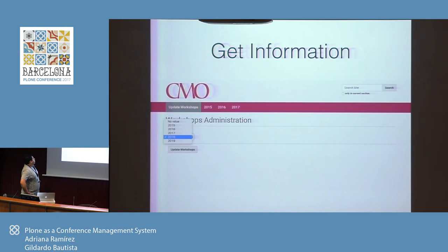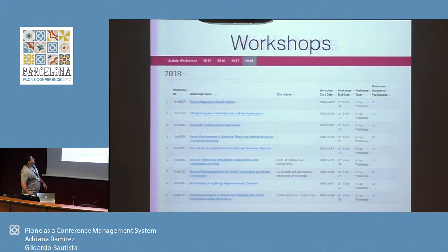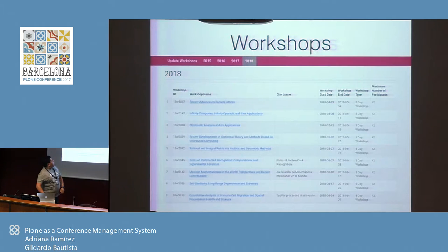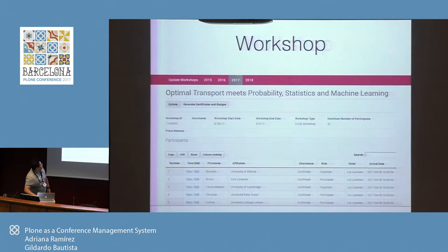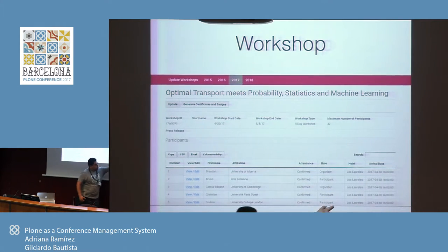The result is a basic interface but it works well for them. The user can select the year for the workshops and update all the workshops for that year. This information comes from the web service and creates objects in the Plone site. As you can see, there is one workshop for every week of the year — 2018 is already there for next year, and 2017 is also full. Users need to see all participant information and be able to edit fields.